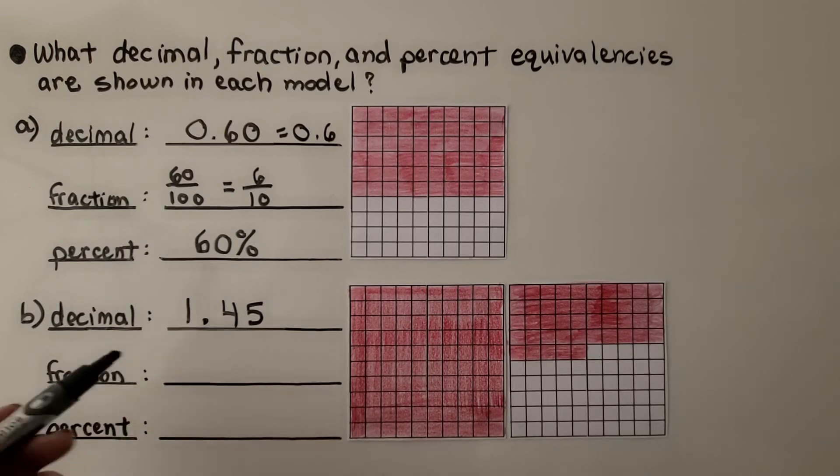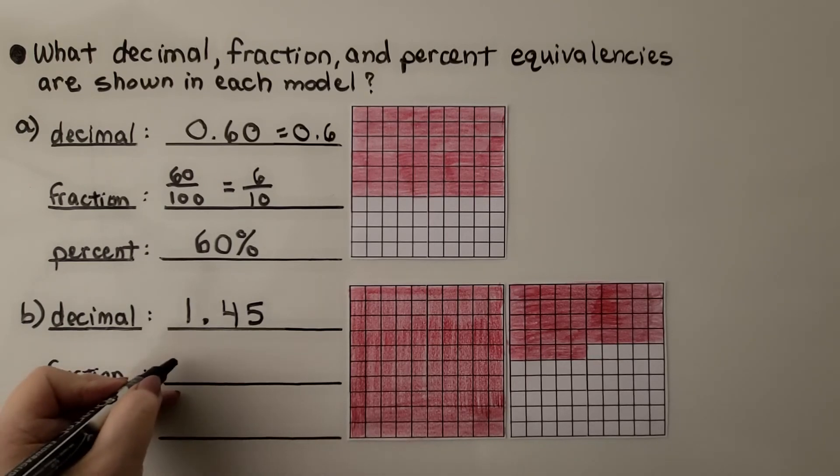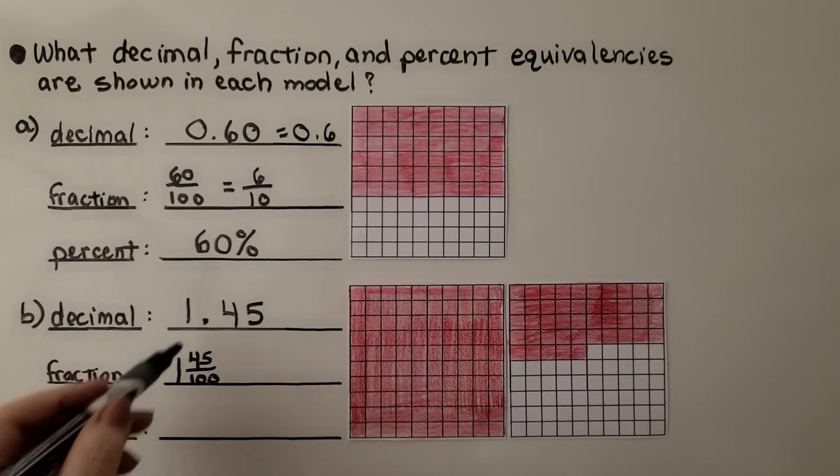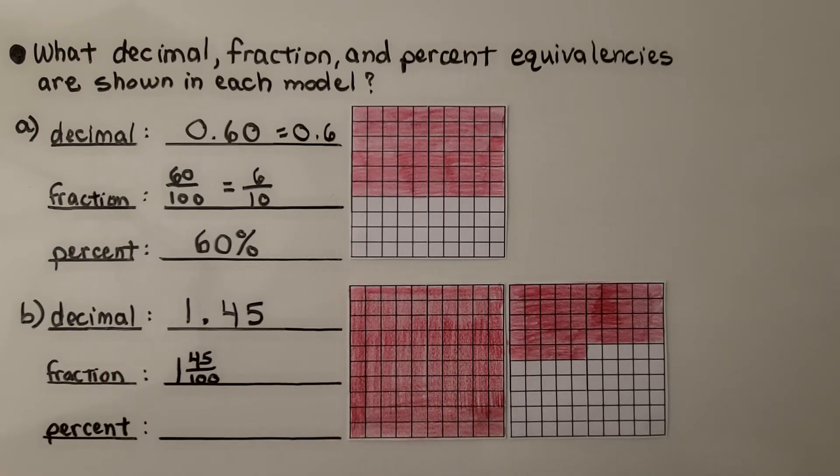As a fraction, well, it's actually going to be a mixed number, isn't it? We could write it as 1 and 45 hundredths. And we can simplify this if we divide by the numerator and denominator's greatest common factor. We could divide them each by 5 and we get 1 and 9 fiftieths.